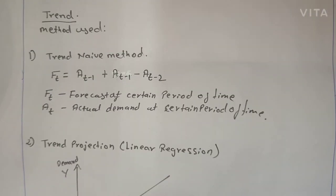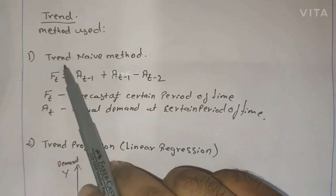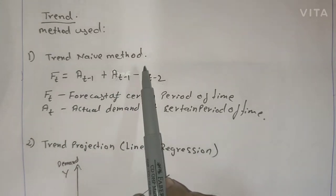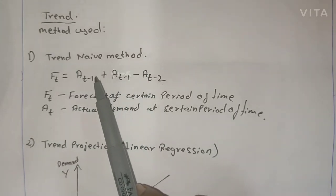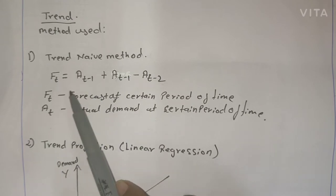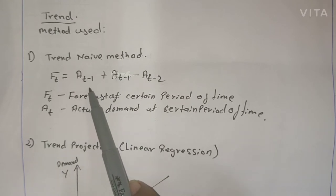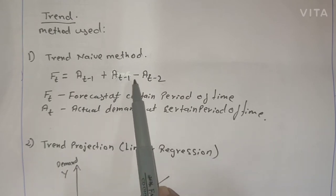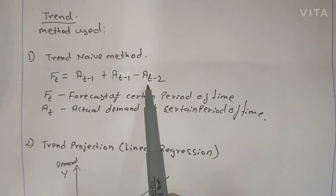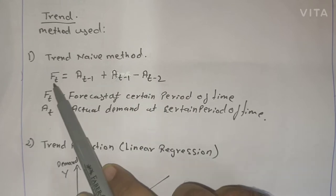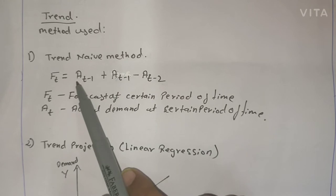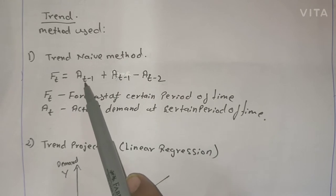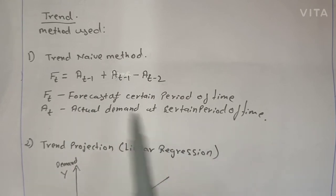To solve trend variation, there are two types of methods used. The first one is the Trend Naive Method. The formula is: f(t) = a(t-1) + a(t-1) - a(t-2), where f(t) means forecast at a certain period and a means actual demand at a certain period.